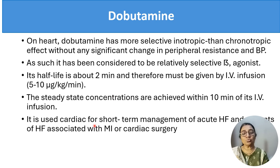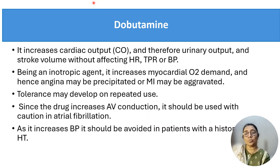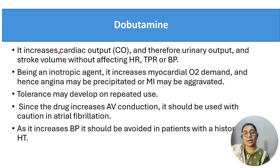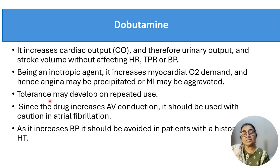Dobutamine acts through selective beta-1 agonist receptors. Its half-life is 2 minutes, so it is given as intravenous infusion at 5 to 10 micrograms per kg per minute, and steady state concentration is achieved within 10 minutes of IV infusion. It is used for short-term management of acute heart failure and patients with myocardial infarction and cardiac surgery. Dobutamine increases cardiac output and urinary output and stroke volume without affecting heart rate, total peripheral resistance, and blood pressure.